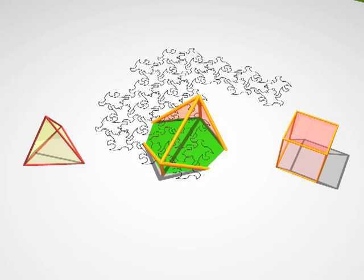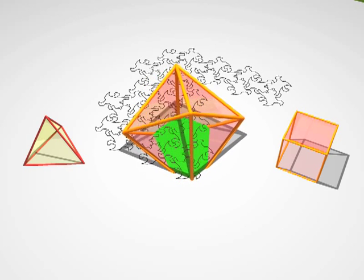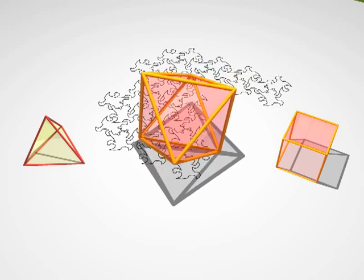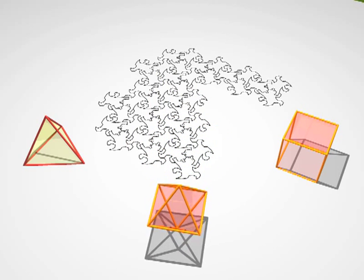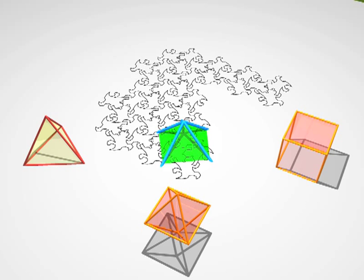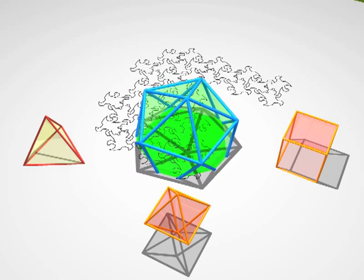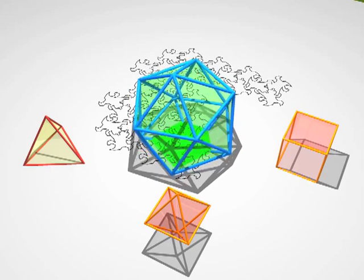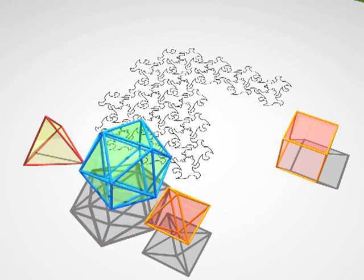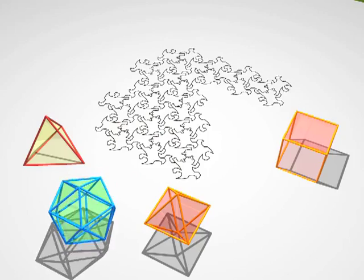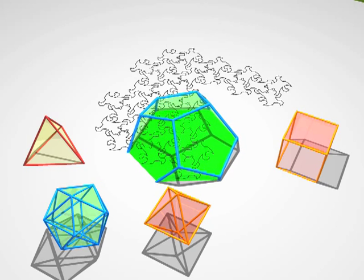And now what? An octahedron with its eight faces. And an icosahedron. It's a solid with 20 faces. And finally, the dodecahedron: 12 faces, 20 vertices and 30 edges.